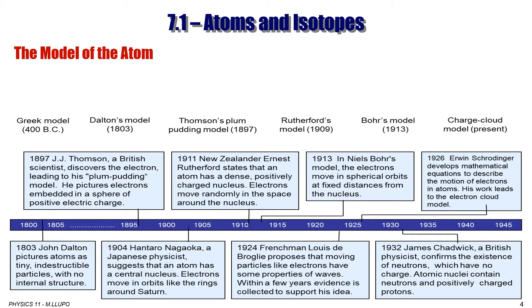In 1803, John Dalton pictured atom as a tiny indestructible particle with no internal structure, not that far from the Greek model. In 1897, Joseph John Thompson, a British scientist, discovered electron that led to his plum-pudding model of the atom. He pictured electrons embedded into a sphere of positive electric charge.